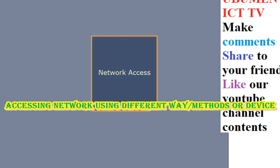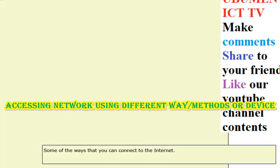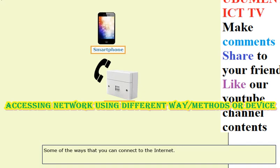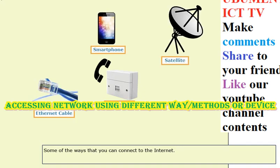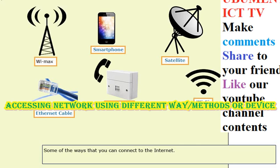Network access. Some of the ways that you can connect to the internet: phone line, smartphone, ethernet cable, satellite, Wi-Fi, and WiMAX.